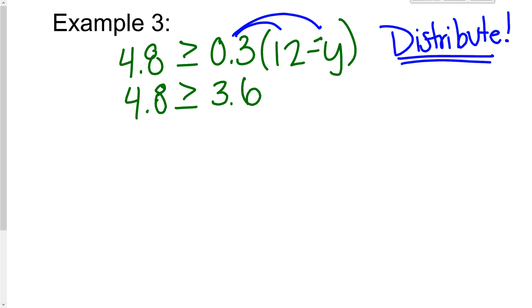And then 0.3 times, remember, this I can kind of make into a negative 1y. So 0.3 times negative 1y is going to give me negative 0.3y.